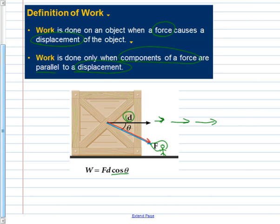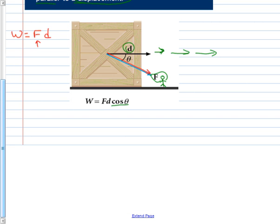Work — the physics definition — is force times displacement, as long as I have that force in the direction of displacement. If it's pulling at some angle, I just need to resolve it into its component. So: work equals force times the cosine of the angle times the displacement. Force times the cosine of the angle gives me the component in the direction of that displacement.